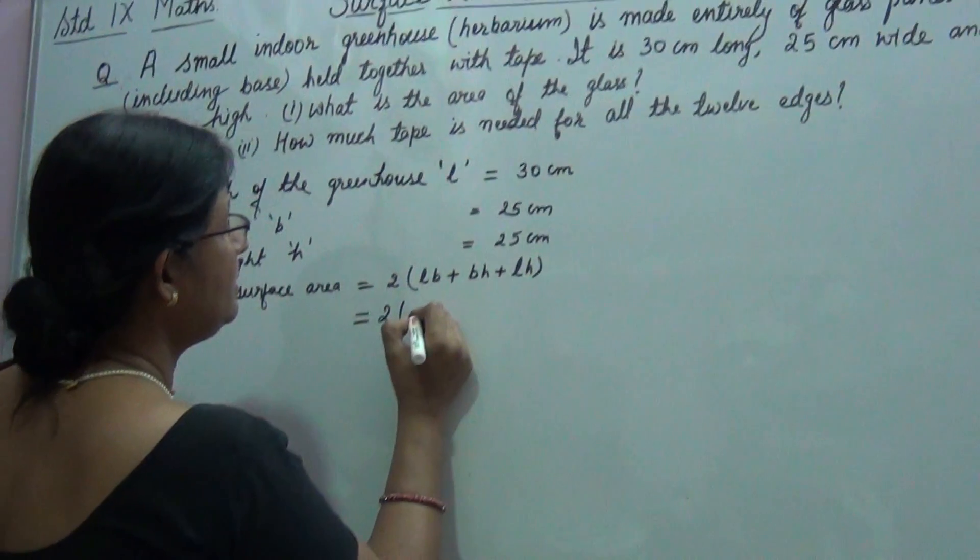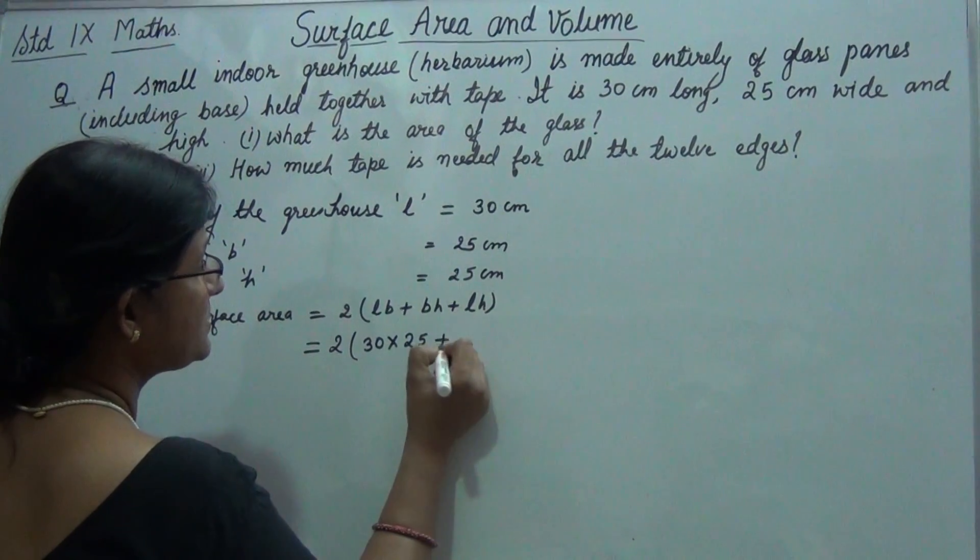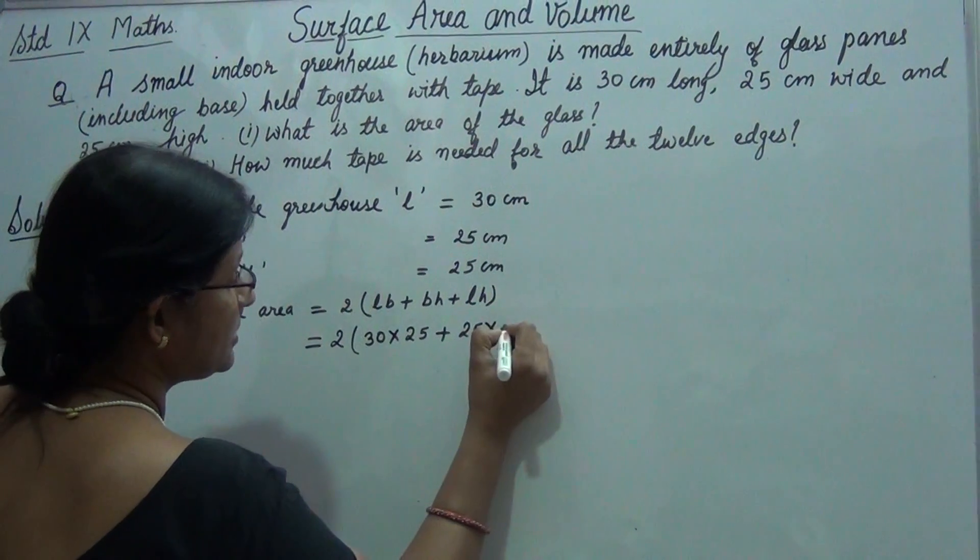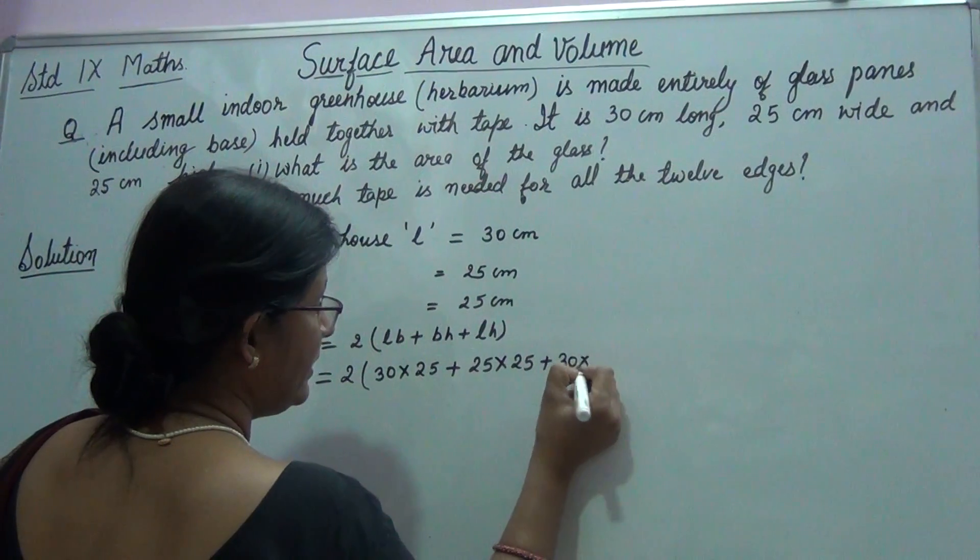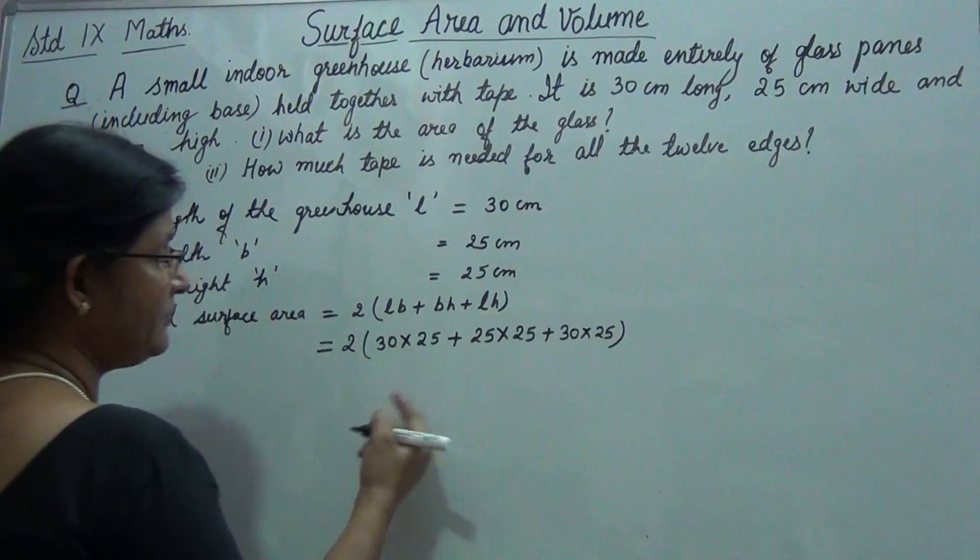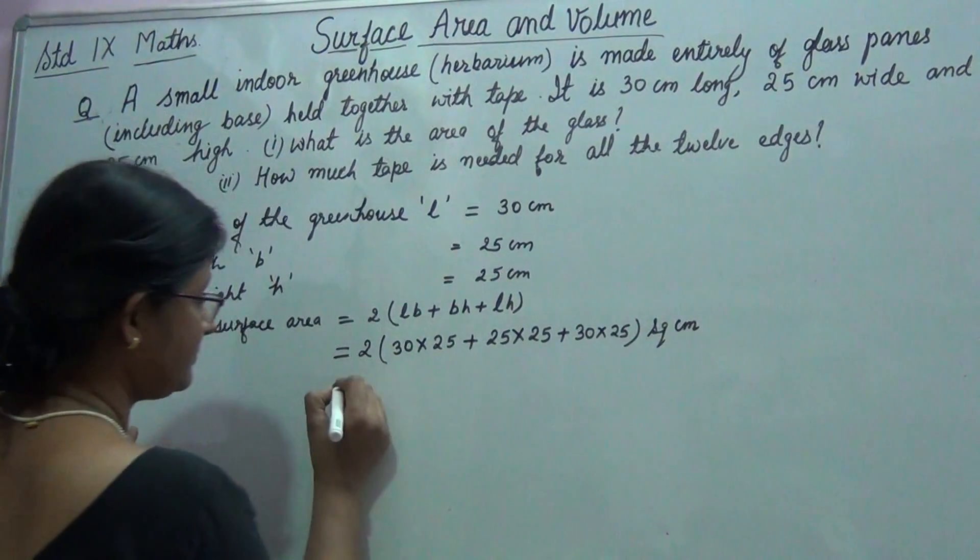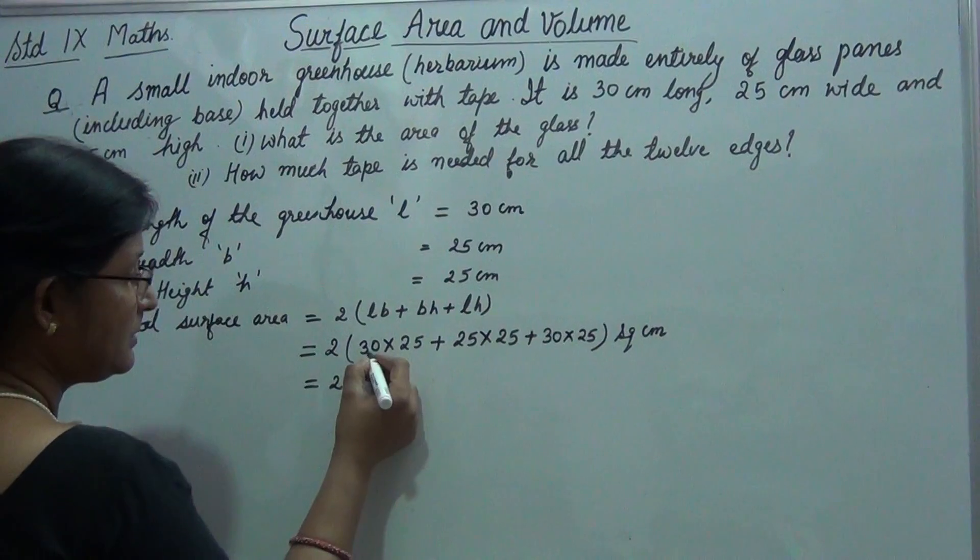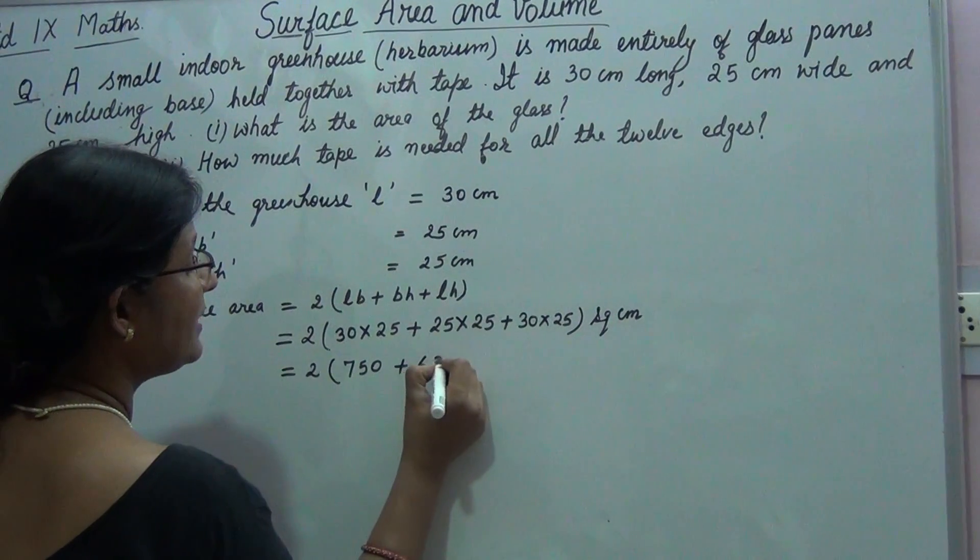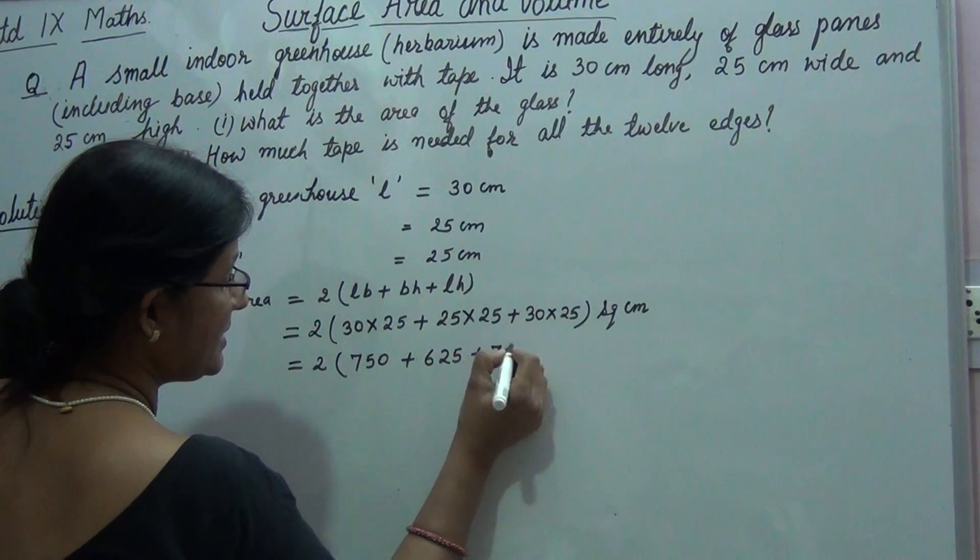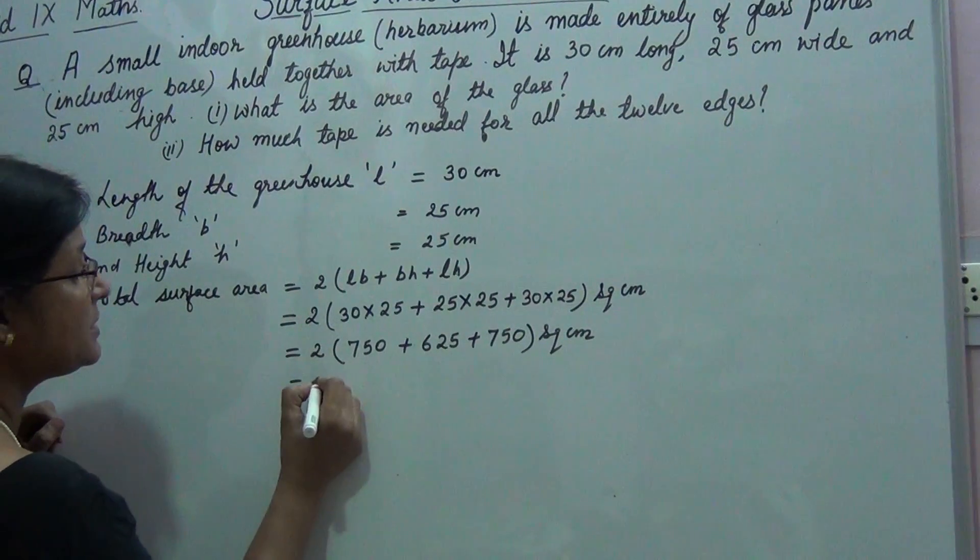So let us start with the calculation by substituting: 30 into 25 plus 25 into 25 plus 30 into 25. And since it is surface area, its unit will be square centimeter.